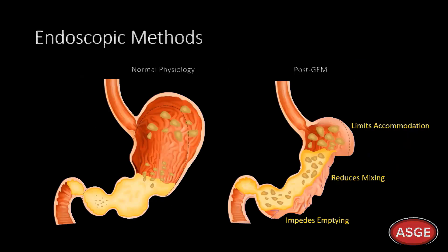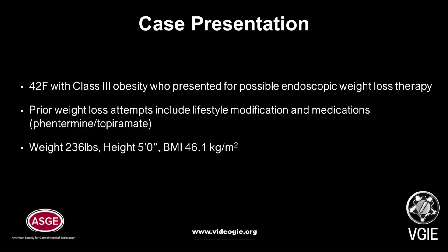On the left we have an illustration of normal gastric physiology with storage of food via fundal accommodation, mixing, and emptying via the antral pump. On the right we have the goals of the GEM procedure, showing limited accommodation, reduced mixing, and impeded emptying.